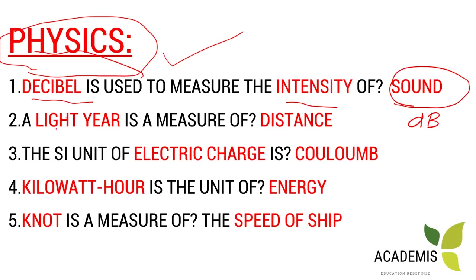Lux is a measure of light intensity. The lux is the unit of light measurement. The SI unit of distance is related to light measurement as well. Newton is associated with distance units. The unit of light intensity is lux, and the SI unit for distance measurement is also relevant here.